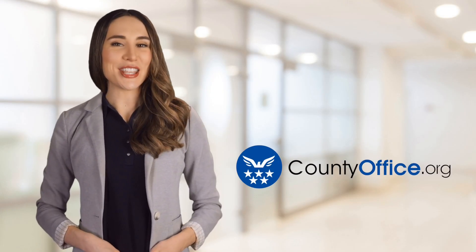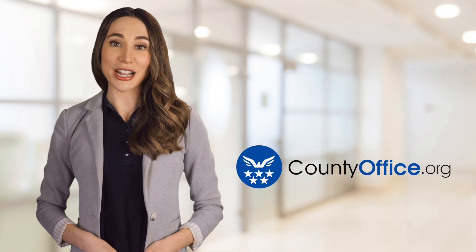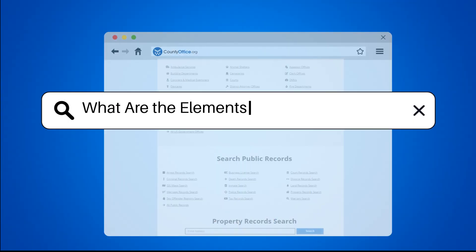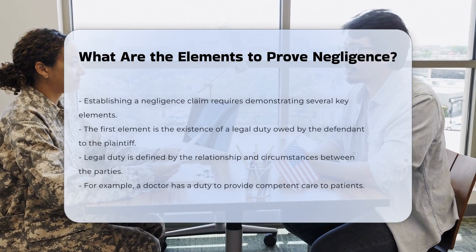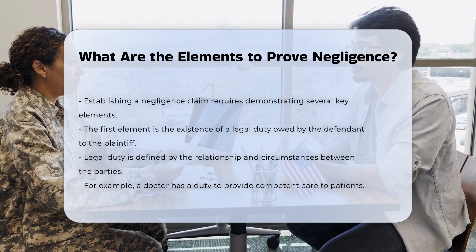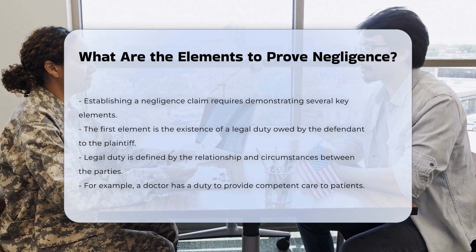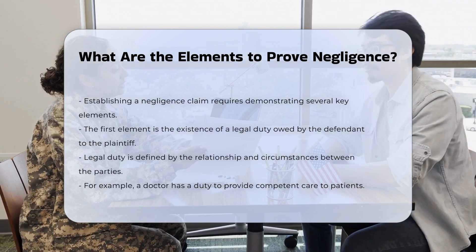Welcome to County Office, your ultimate guide to local government services and public records. Let's get started. What are the elements to prove negligence? To establish a negligence claim, several key elements must be demonstrated. These elements are fundamental in determining whether a defendant can be held liable for the injuries or damages suffered by a plaintiff.